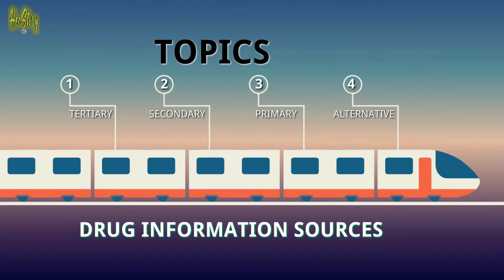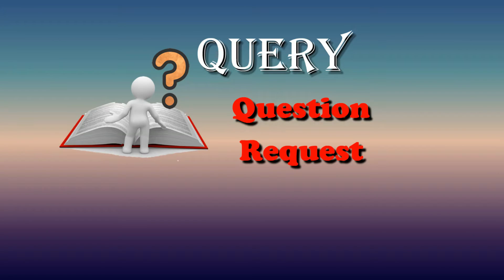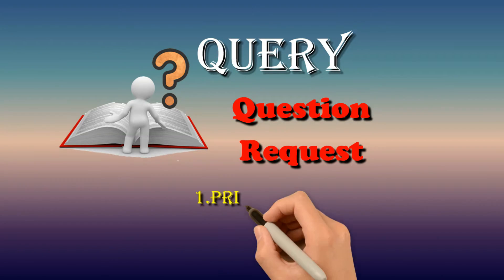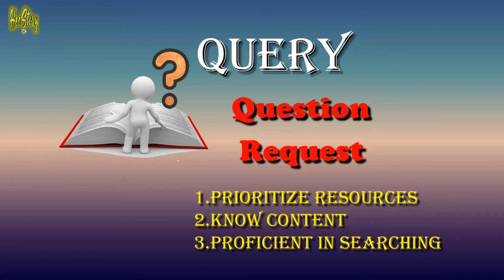Before using these different types of resources, we need to have a query. A query is a question or simply a request from our patient. When they have a question, we use different types of resources to answer it. In having a query, we need to prioritize resources — we need to know what specific type of resource to use to answer their question.